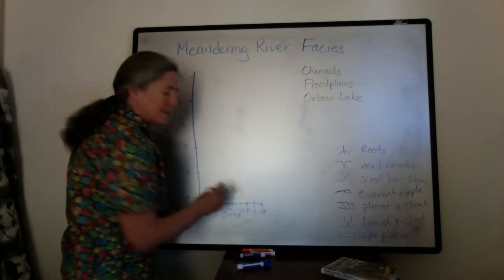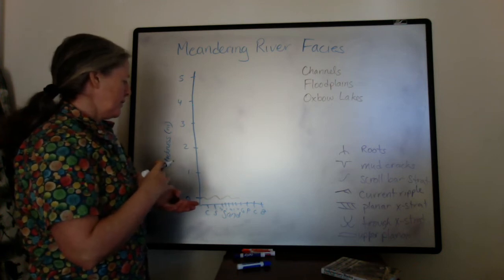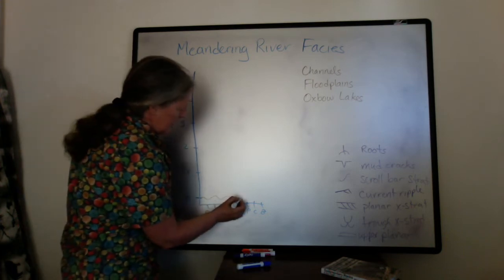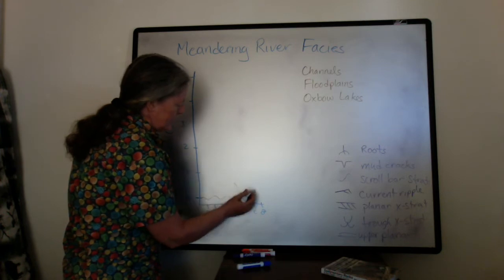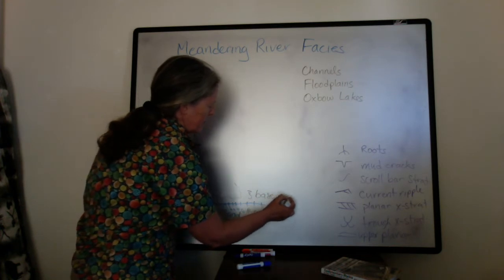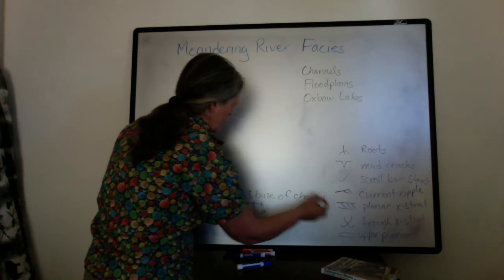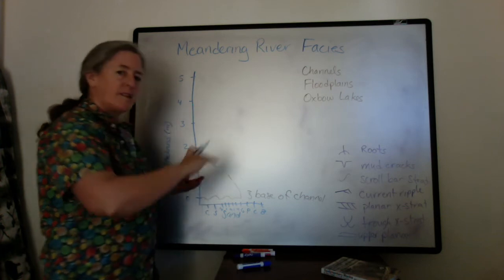As the bars migrate, we have the coarsest sediment deposited at the base of the channel. And then as it fines upward, it's equivalent to going up the side of the point bar.